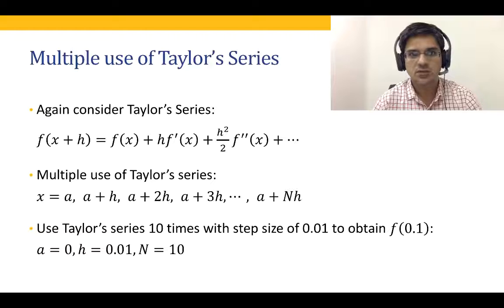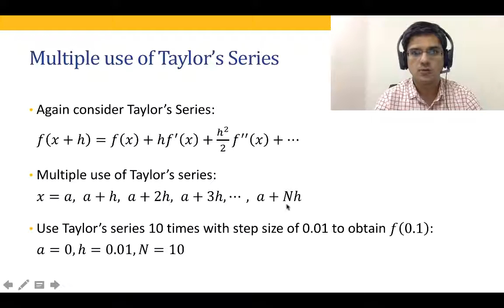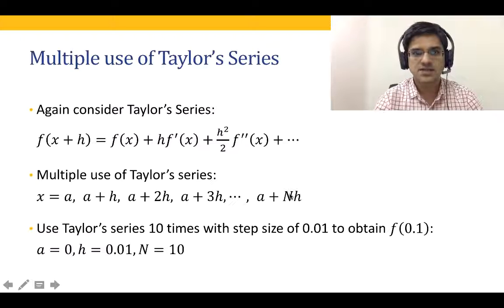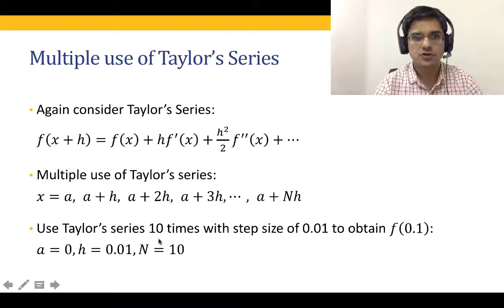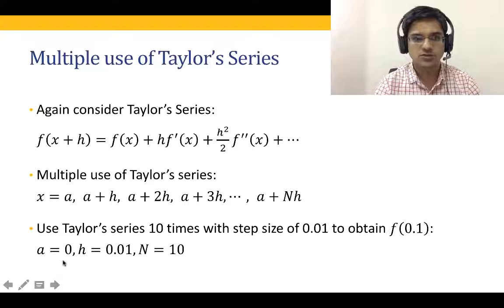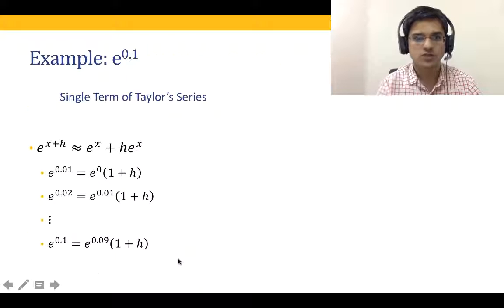That means we start with e to the power 0, then go to e to the power 0 plus h, e to the power 2h, e to the power 3h, and so on up to e to the power nh, taking multiple steps to go from 0 to 0.1. For example, if we were to use the Taylor series expansion 10 times starting with a equal to 0 and h equal to 0.01, here is what we get.